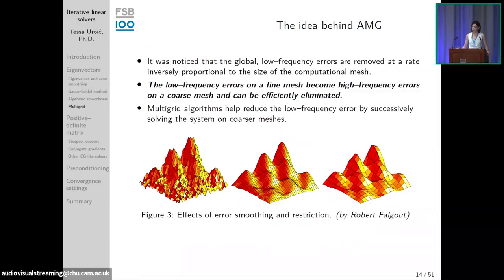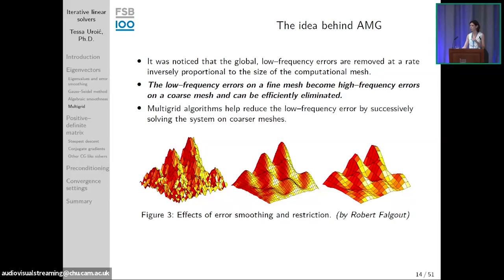There is a way to speed up fixed point methods using a projection — a special type of matrix that keeps only certain eigenvector components of the error alive. Multiplying the linear system by the projection matrix yields a smaller-dimension system retaining only those error components that did not converge. This is the basic idea of multigrid: only keep the slowly converging components of the error. Multigrid and smoothing methods work together in tandem — you cannot have one without the other.